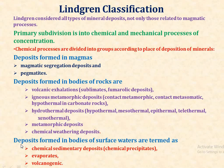The third group in Lindgren's classification is deposits formed in bodies of surface water, including chemical sedimentary deposits, chemical precipitates, evaporites, and volcanogenic deposits.